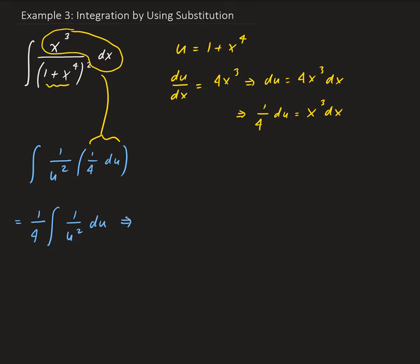And this is going to give us, this is basically 1 fourth times the integral of u to the minus 2 du.